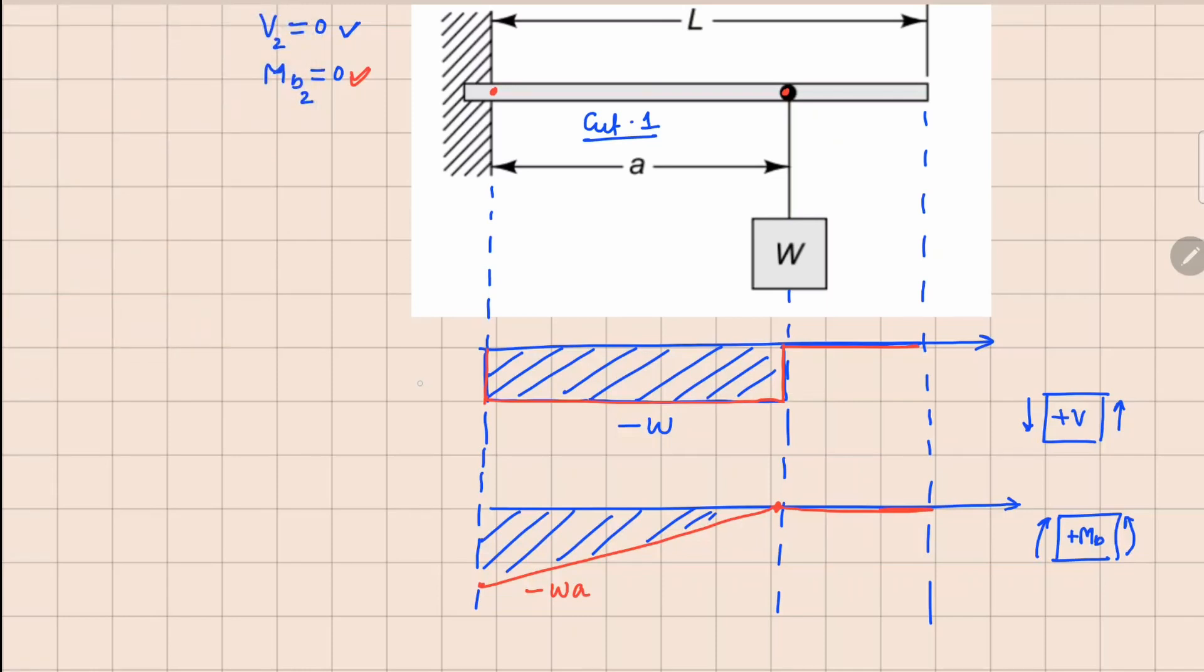I have missed out marking the axes, and then we will select the names here. So this one is your Vx and this one is your MBx.